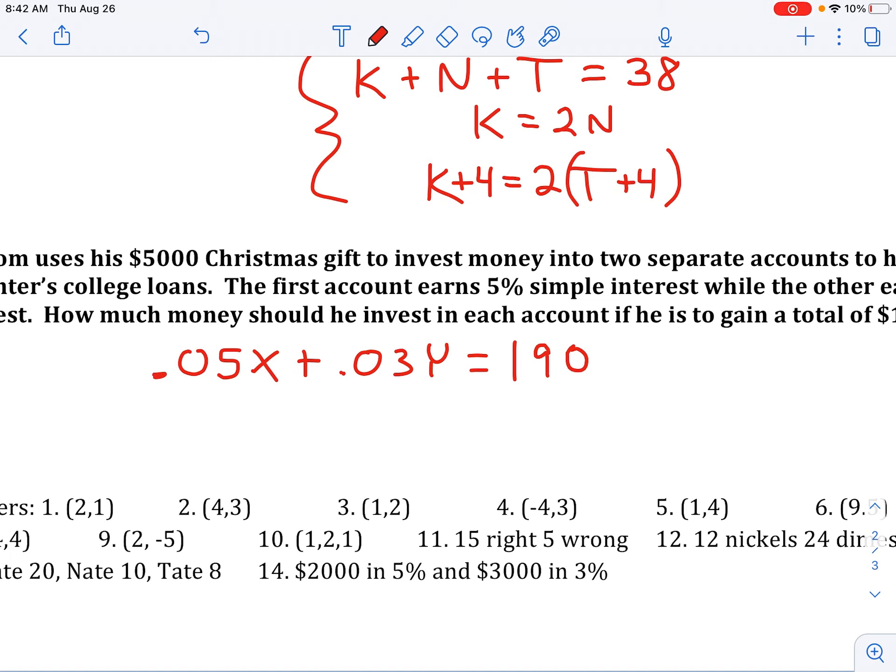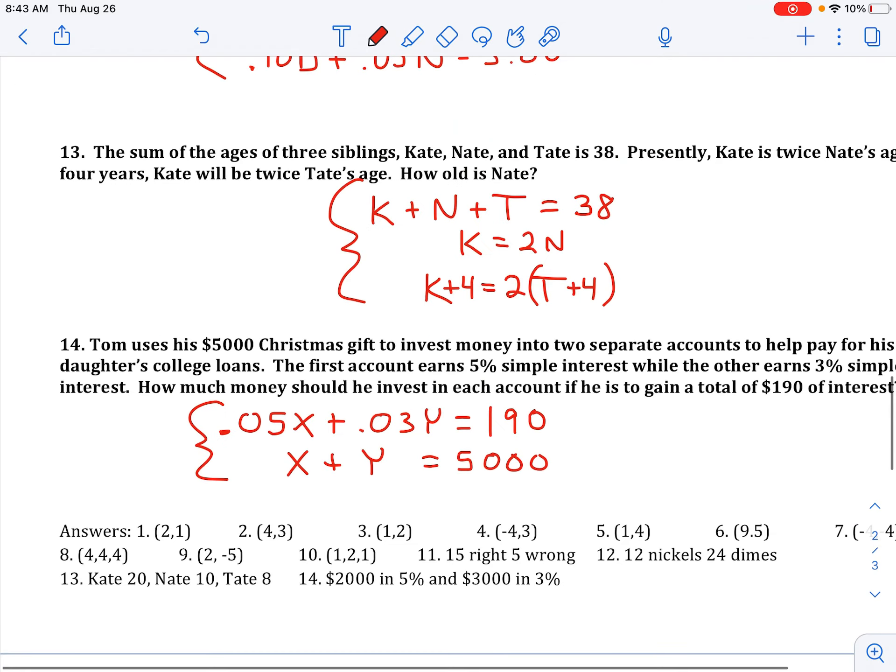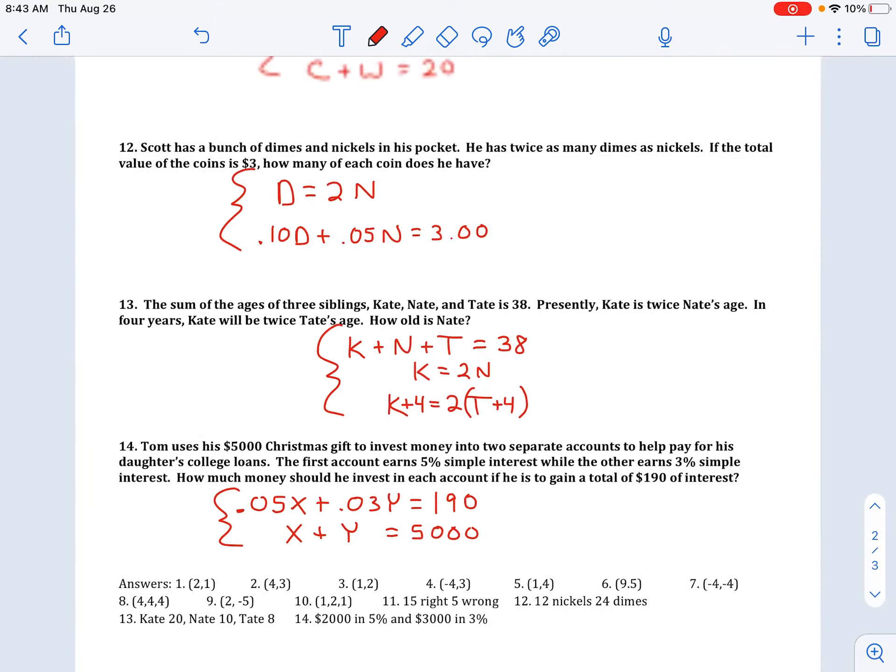Our second equation now, since we have two unknowns, we know that the amount that he put in the first account, which is X, and the amount he put in the second account, which is Y, is equal to $5,000. And so that is our 2x2 system.